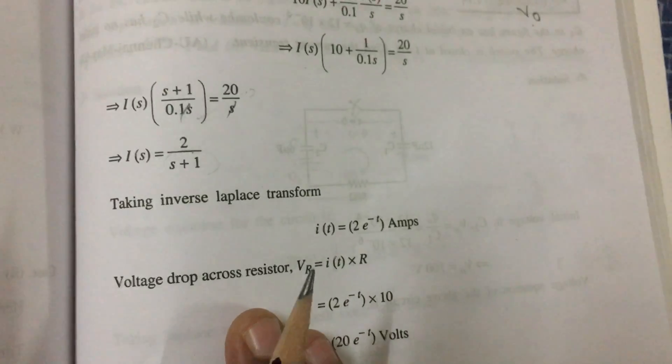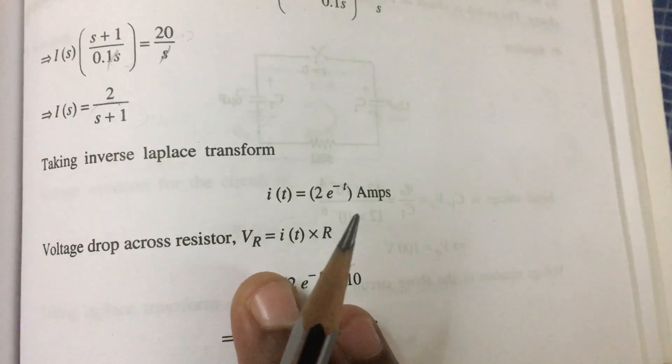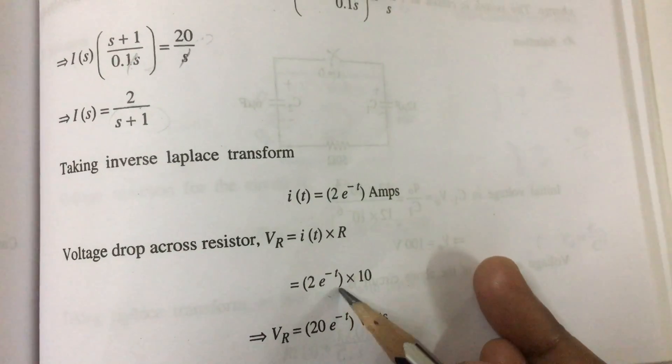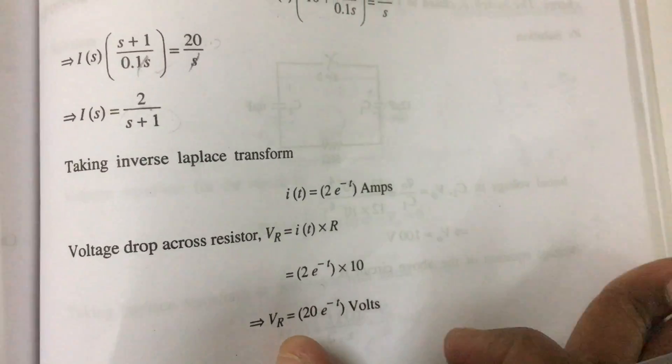Next, find the voltage across the resistor and capacitor. What is the formula? Voltage across the resistor is i(t) into R. i(t) is 2 into e power minus t, R is 10, so 20 into e power minus t.